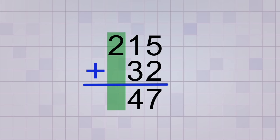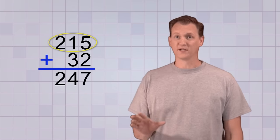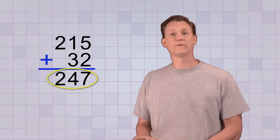And last of all, we add the hundreds place column. But there's only one digit there, so we don't really have to add it. We just bring the 2 down to our answer like this. Of course, we could add the 2 to the 0 that we imagined there as a placeholder, but 0 plus 2 will just give us 2 also. There! 215 plus 32 equals 247.